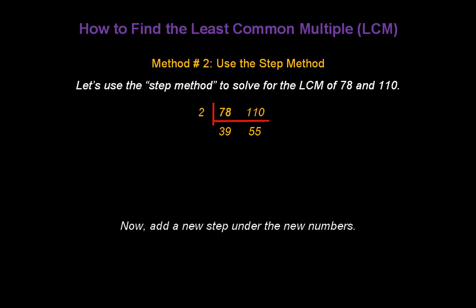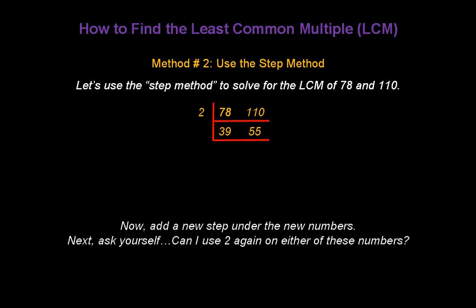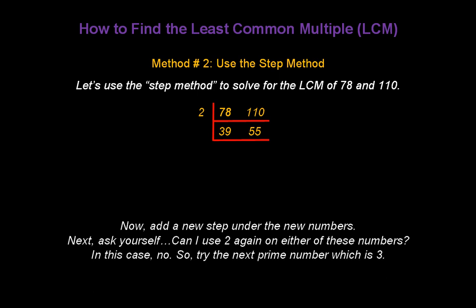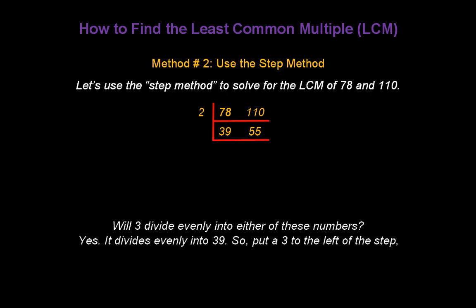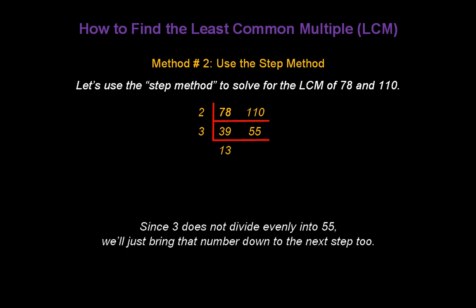Now, add a new step under these new numbers and ask yourself: can I use 2 again on either of these numbers? In this case, no. So, try the next prime number, which is 3. Will 3 divide evenly into either of these numbers? The answer is yes — it divides evenly into 39. So, we're going to put a 3 to the left of the step and divide 39 by 3, which gives us 13. Place that result under the 39. Since 3 does not divide evenly into 55, we're just going to bring that number down to the next step.